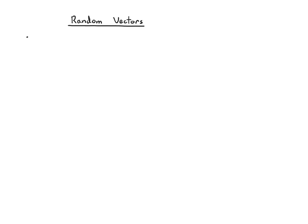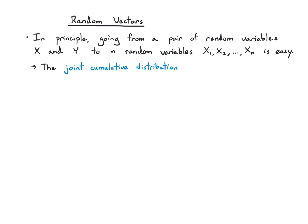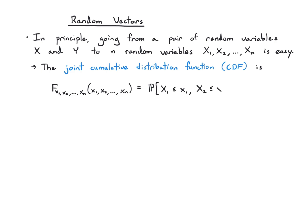In this video, we're going to jump all the way from pairs of random variables to random vectors. Going from a pair of random variables, which we were calling x and y, to n random variables, which we'll call x1, x2, up to xn, is pretty easy. We can define a joint cumulative distribution function — the joint CDF. This is just a function with a capital F of x1 through xn, and it's the probability that x1 is less than little x1, x2 is less than little x2, and xn is less than little xn.